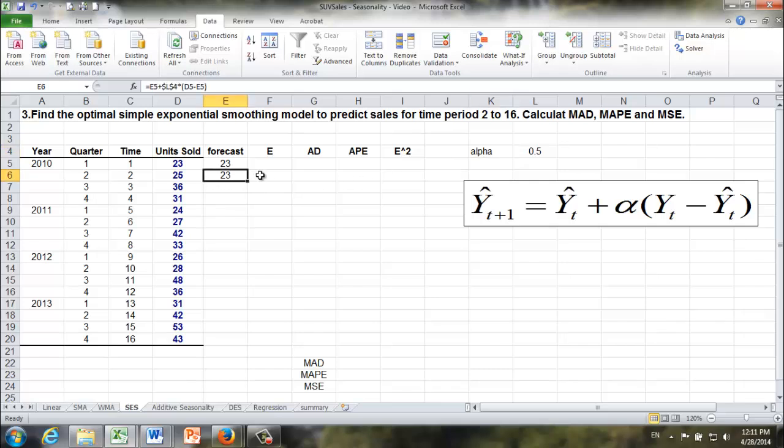Okay, and once we have the forecast, we can get the forecast error. You see over here, we start from time period 2 because for time period 1, we kind of cheated a little bit, right? So we make the very first forecast equal the actual sales of the first time period. So we start from time period 2 to calculate forecast error, absolute forecast error, and absolute percentage error.